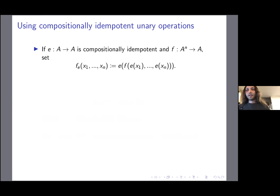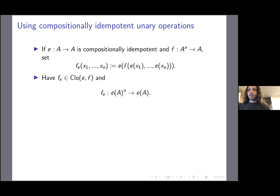How do we use these? If I have some compositionally idempotent e and some higher-arity f, I define f_e by applying e to all inputs, applying f to the result, and applying e to the output. I don't actually need to apply e to the inside things, but it makes clear that all I care about is the restriction of f to the outputs of e. Then f_e is in the clone generated by e and f, and f_e is essentially a function from (e of A)^n to e of A.